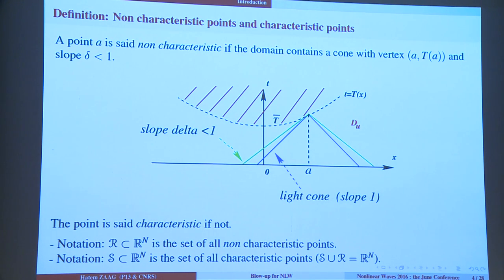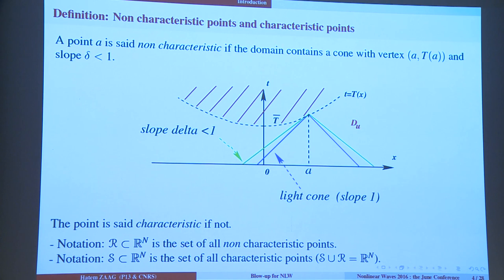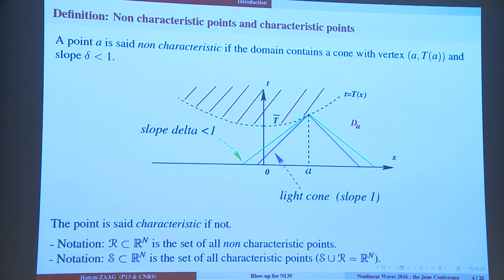All other points will be called characteristic points and their set will be called S — S like singular, because in fact the solution blows up everywhere. So you are either non-characteristic or characteristic, and in fact characteristic points will be the nasty ones where you will have a more complicated behavior.